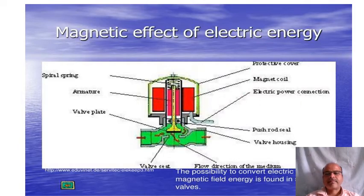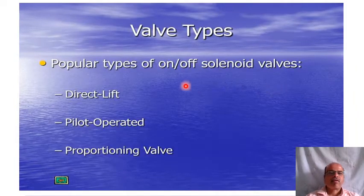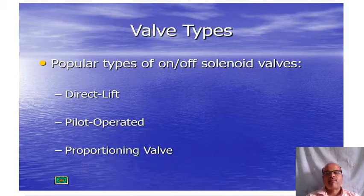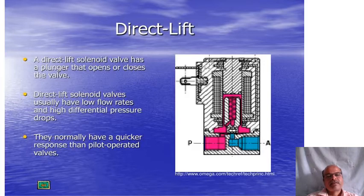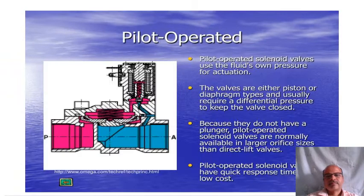The popular types of on-off solenoid valves are: directly operated, pilot operated, and proportioning valves. In a directly operated solenoid valve, a plunger directly opens or closes the valve. These usually have low flow rates and high differential pressure drops, and normally have a quicker response than pilot operated valves.